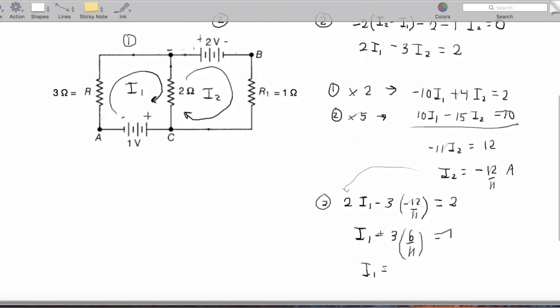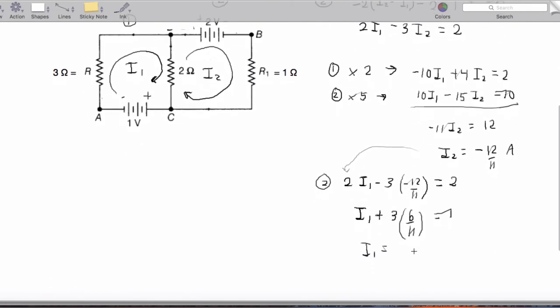Those should be both positive now because negative times negative is positive. So I end up getting I1 equals 11 over 11 minus 18 over 11. I1 ends up being negative 7 divided by 11.